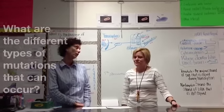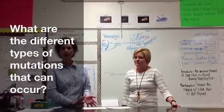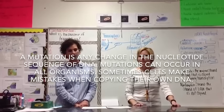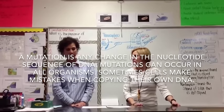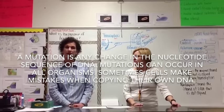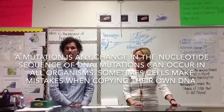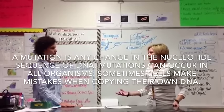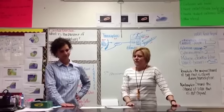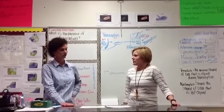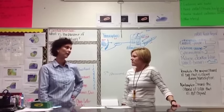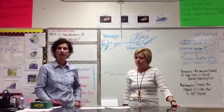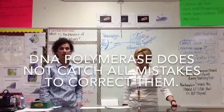Mutations occur in all organisms, from the smallest bacterial cell to the giant blue whale. They happen when mistakes are made when cells copy their DNA or when mRNA is copied from DNA. Although we have DNA polymerase to check and proofread, sometimes it doesn't catch every mistake, and mutations come through as changes.